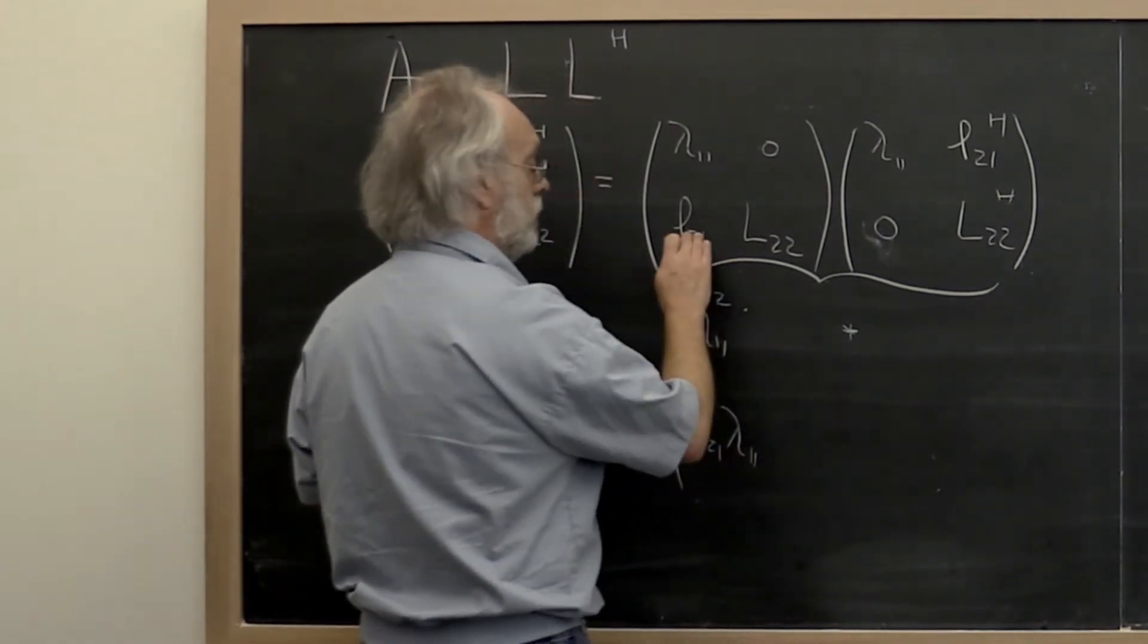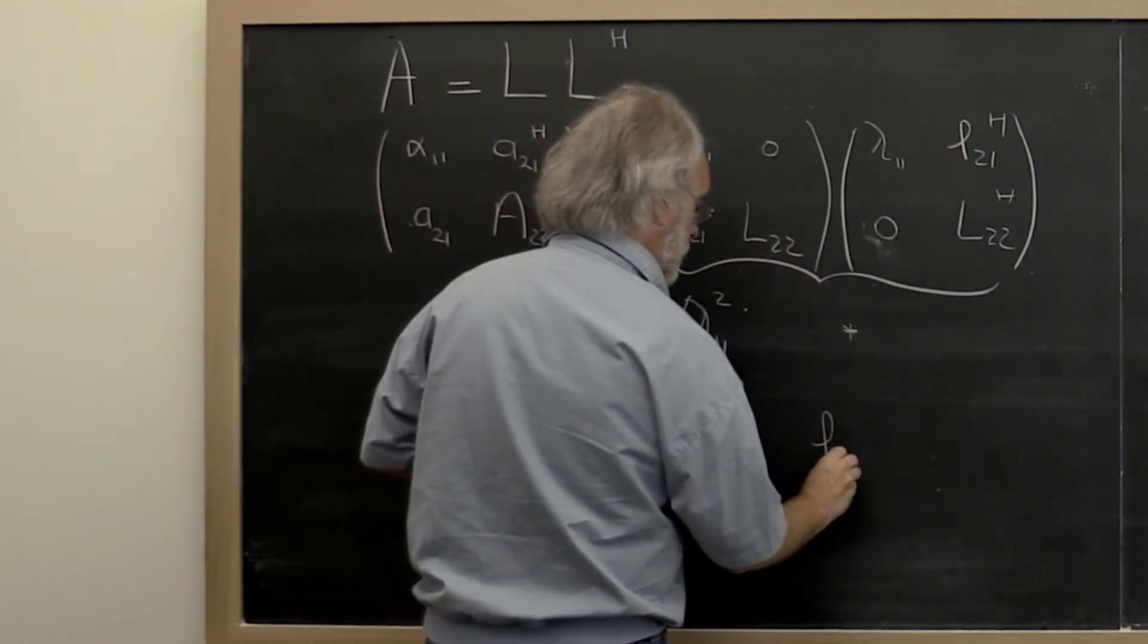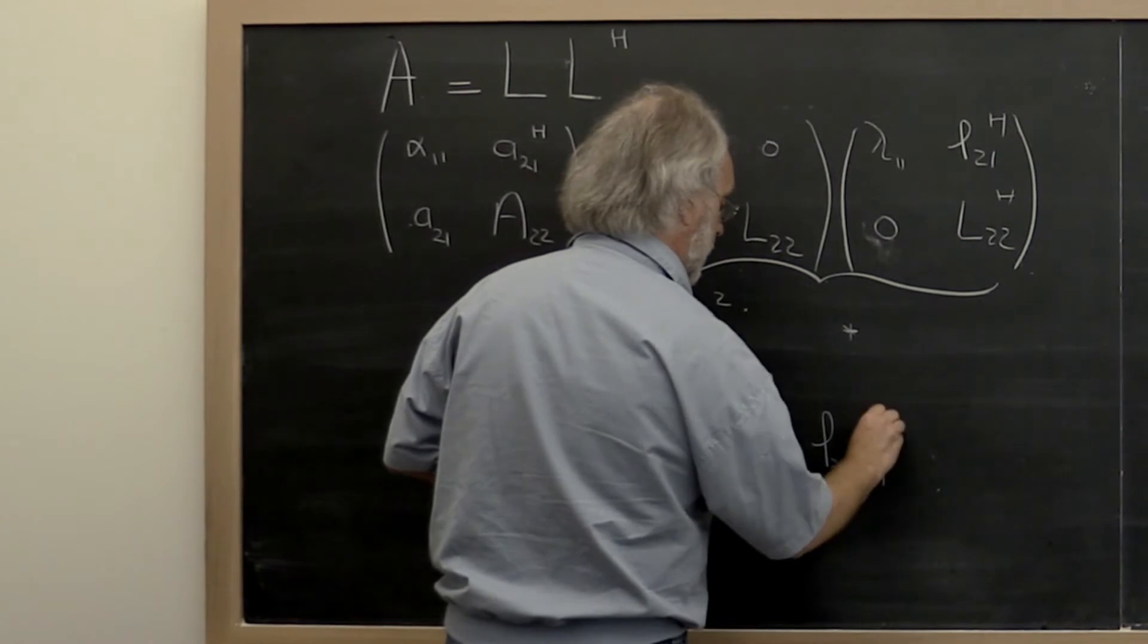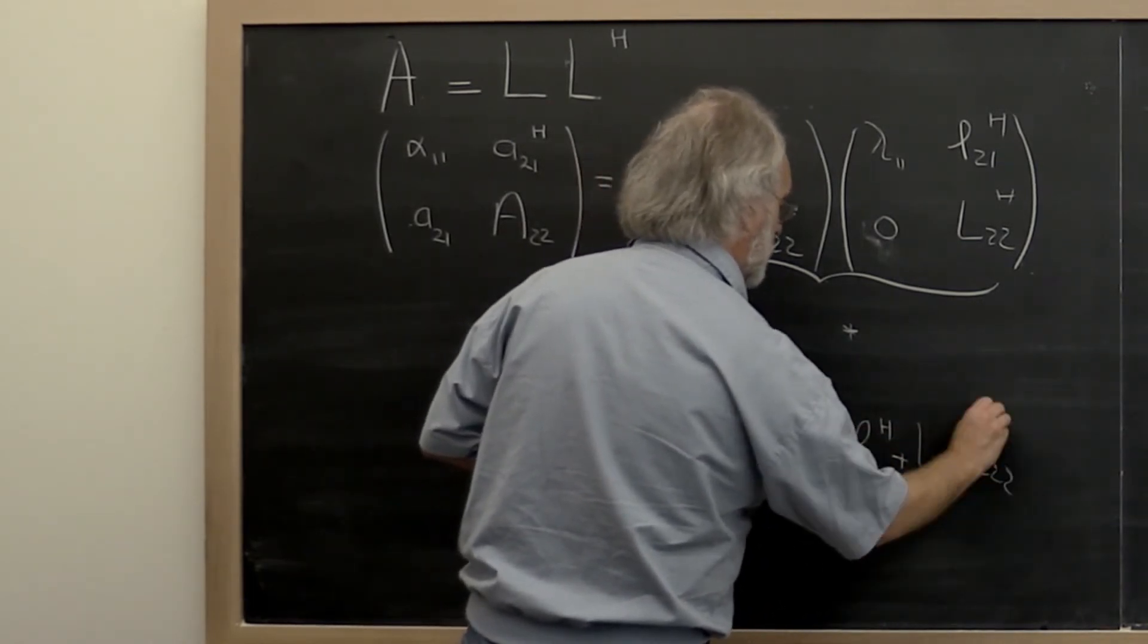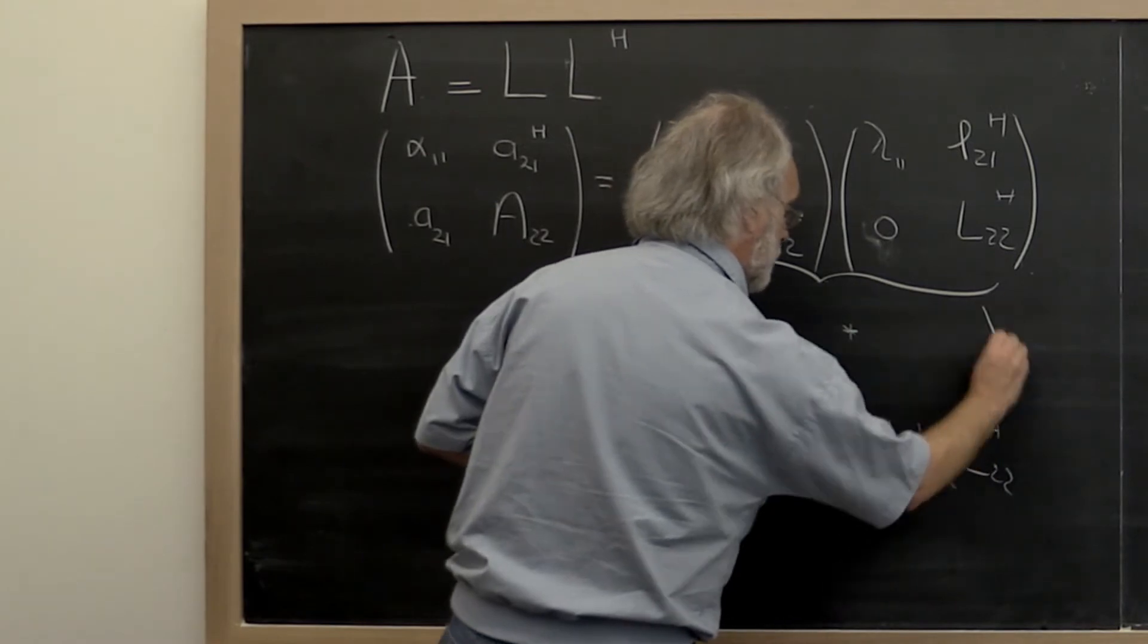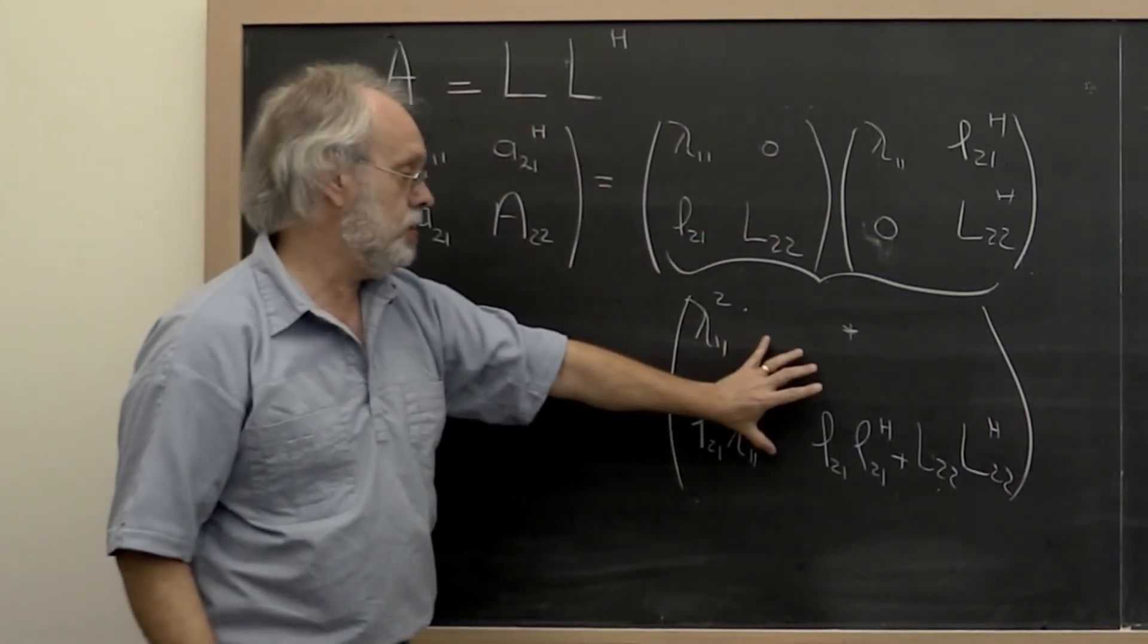And then finally down here we get that L_2,1 times L_2,1 Hermitian transpose plus L_2,2 times L_2,2 Hermitian transpose goes into that position right there. And this must be equal to that.